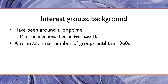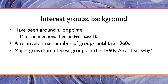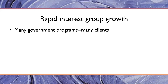There was a relatively small number of interest groups until the 1960s, but in the 1960s there was rapid growth. One of the first reasons is the growth in government programs. When you create programs to support education, fair housing, or voting rights, you create clients for policy — people who rely on these policies. With many programs and many clients, you create many interest groups that mobilize around the maintenance and expansion of those government programs.